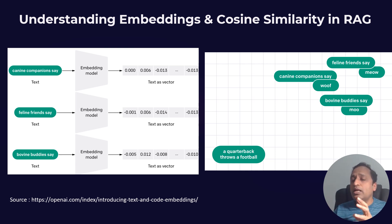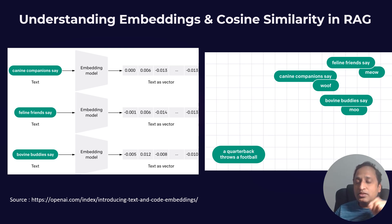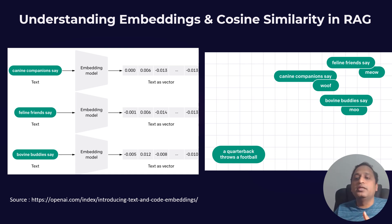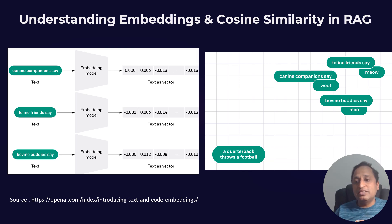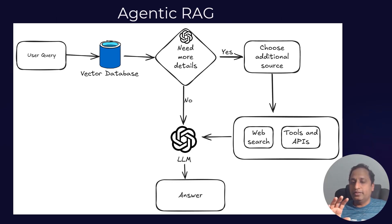In high-dimensional spaces, cosine similarity is often preferred because magnitude differences can be misleading — for example, two long but similar documents may have a high Euclidean distance but still be semantically similar. When a user asks a question, embeddings and cosine similarity retrieve the most semantically relevant information before generating a response, ensuring you get data that is semantically closer to the user query rather than just keyword matches.